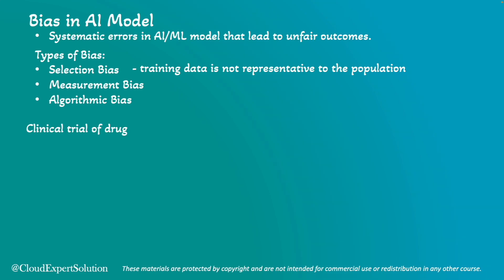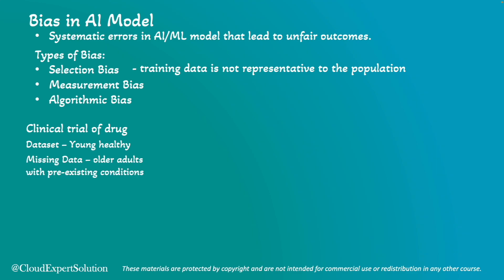Let's understand selection bias using a medical research example. If a clinical trial for a new drug only includes young and healthy participants, the results may not be applicable to older patients or those with pre-existing conditions. A model trained on this biased sample may not accurately predict the drug's effectiveness for the broader population.